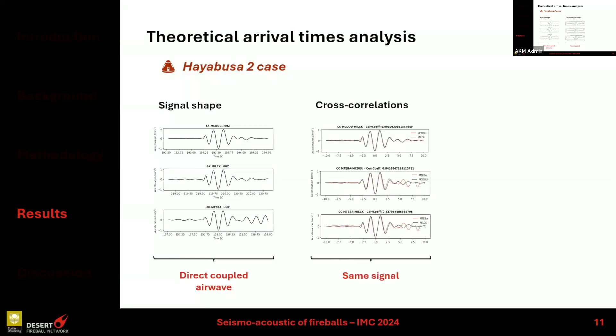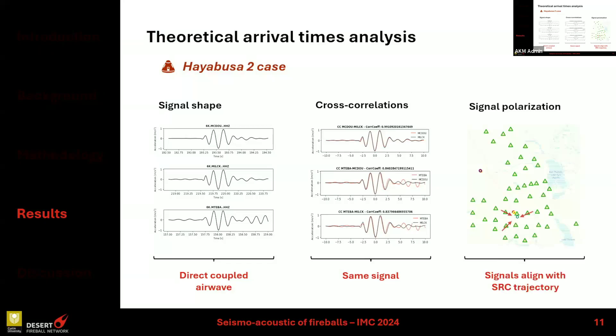Thanks to the dense network I was able to cross-correlate the signals between stations, and I got really interesting correlation coefficients — for example, 0.99 — knowing that a coefficient of 1 means the two signals are perfectly similar. So I was looking at the same signal everywhere. Finally, I looked at the polarization of the signal — the direction of arrival at my seismic station — and everything was pointing toward the Hayabusa2 trajectory.